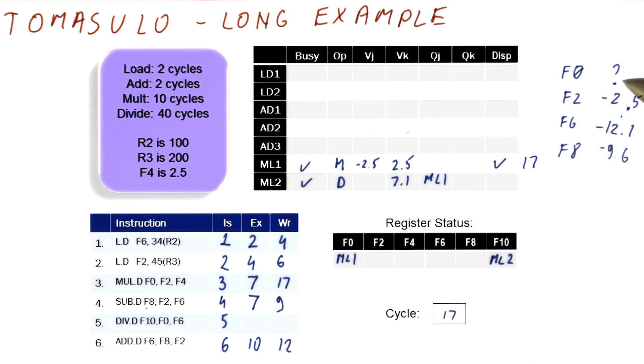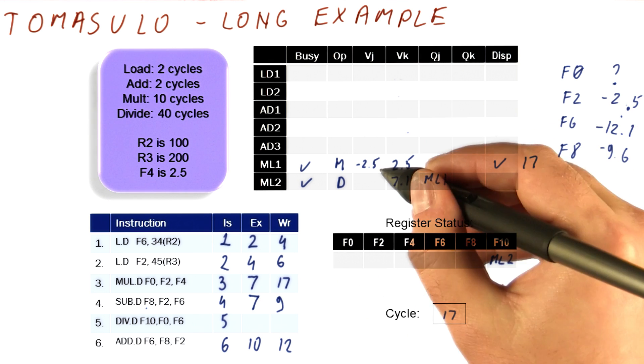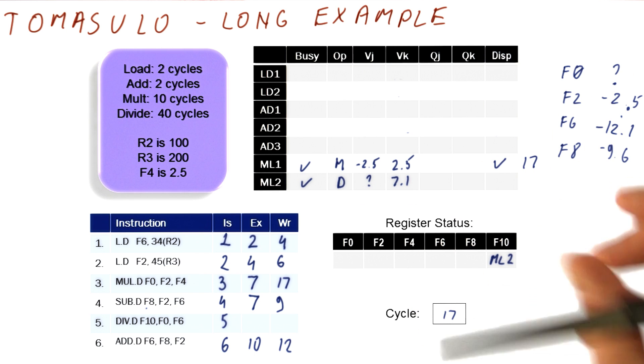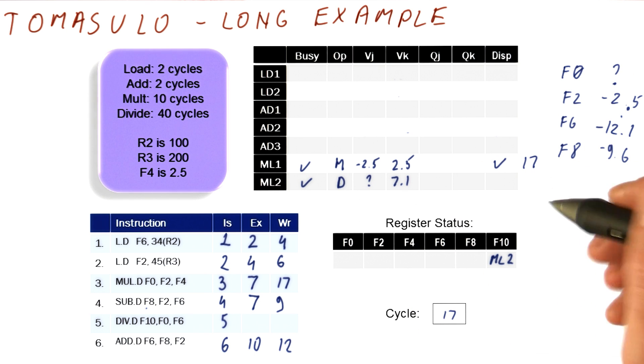So F0 is going to become whatever that result is. We're not going to even try to compute that. It's going to be un-renamed here. It's going to put that value over here. And now the divide is finally ready to go. And we're going to free this reservation station.